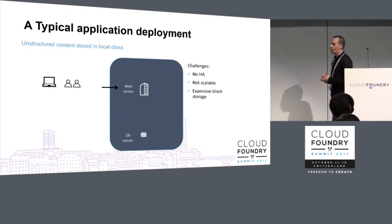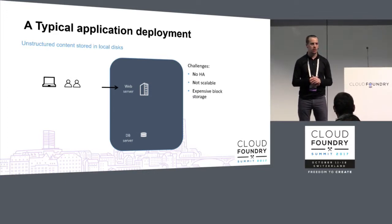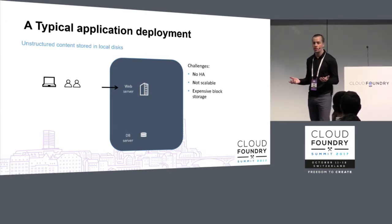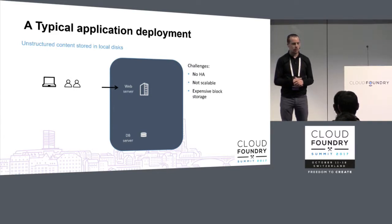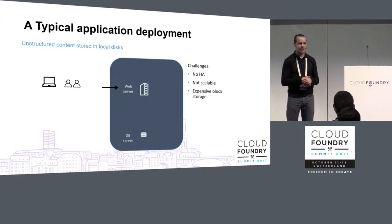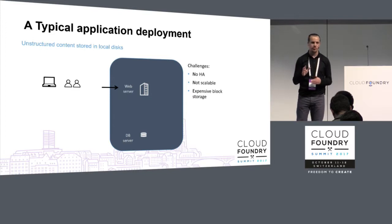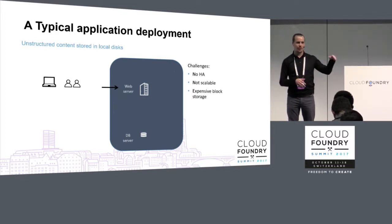If you want to deploy your application in a virtual machine or physical server and you need to store some unstructured content — some PDFs, some pictures — one very simple way is to store that unstructured content in the VM itself, in the VMDK, for example, if you use VMware. That sounds kind of weird, but many, many people are still doing that. I have an example of one bank I work with where they have around 5,000-plus applications deployed like that — perhaps 500 gigabytes here, one terabyte there. At the end, it's two or three petabytes of very expensive block storage.